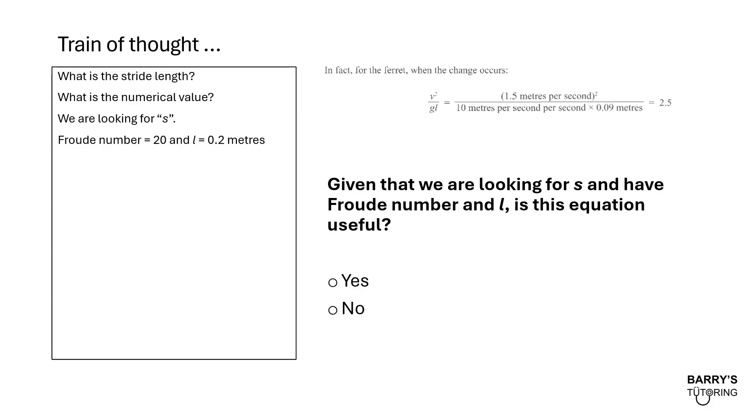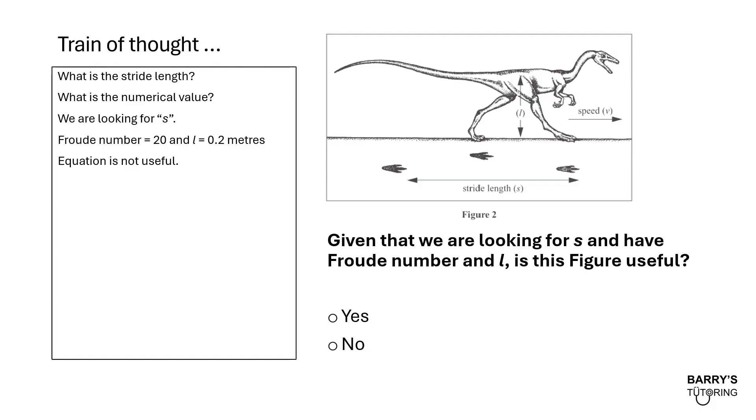This is an equation that appears in the question. Now, bear in mind, we're looking for S and we have Froude number and L. Is this equation useful? I'll give you a bit of time. What do you think? Does that look useful to us? No, unfortunately, this is not a useful equation because we're looking for S and S is nowhere to be found. So we'll keep on going. Maybe there's some information in the stimulus that might be more relevant.